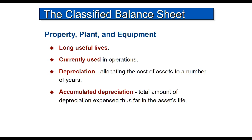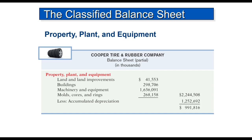Accumulated depreciation tells the reader how old the asset is. Here we have land, land improvements, buildings, machinery, molds, cores, and rings — this is a tire and rubber manufacturing company — less accumulated depreciation. You can see the accumulated depreciation is about half the value of all those assets: total assets $2,244,000 and accumulated depreciation $1,252,000, so a little more than half. That tells you the age of those assets.